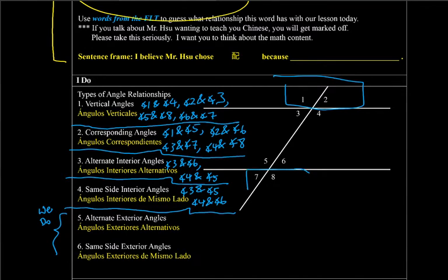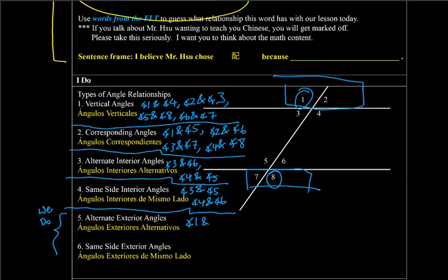Exteriors — exteriores — alternate, so other side. Otro lado. Uno y 8. And then 2 and 7. Dos y 7.